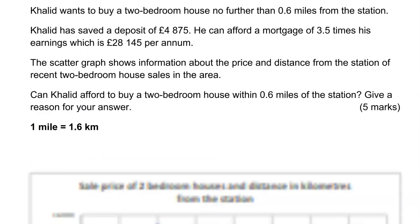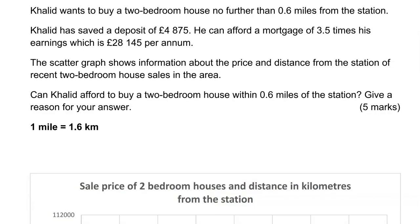Khalid wants to buy a 2 bedroom house no further than 0.6 miles from the station. Khalid has saved a deposit of £4,875. He can afford a mortgage of 3.5 times his earnings which is £28,145 per annum. The scatter graph shows information about the price and distance from the station of recent 2 bedroom house sales in the area. Can Khalid afford to buy a 2 bedroom house within 0.6 miles of the station? Give a reason for your answer.